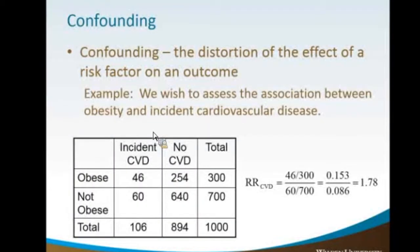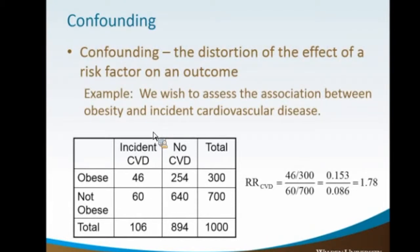What is a confounder? Confounding is the distortion of the effect of a risk factor on an outcome. In this example, we're looking at the association between obesity and cardiovascular disease. Some of you understand what an odds ratio is — here we have a relative risk of 1.78, meaning you have an increased chance of having cardiovascular disease if you're obese compared to non-obese.